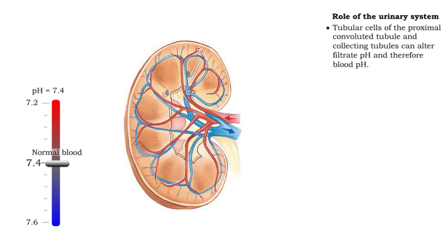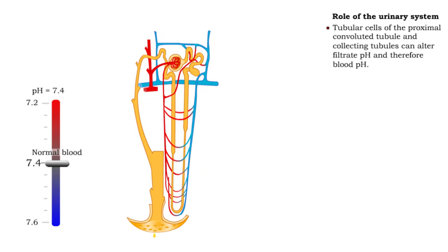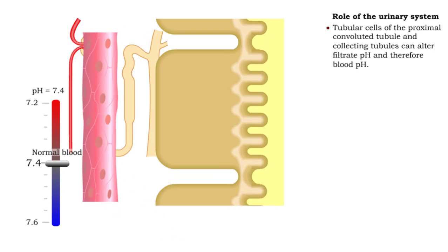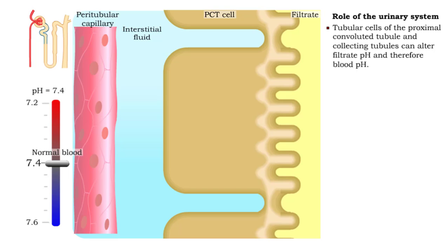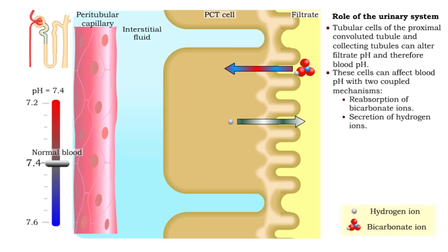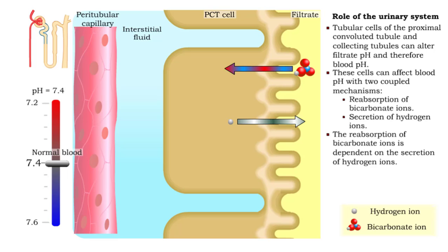Tubular cells of the proximal convoluted tubule and collecting tubules can alter filtrate pH and therefore blood pH. These cells can affect blood pH with two coupled mechanisms. The first mechanism is the reabsorption of bicarbonate ions into the cell from the filtrate. The second is the secretion of hydrogen ions out of the cell to the filtrate. The reabsorption of bicarbonate ions is dependent on the secretion of hydrogen ions.